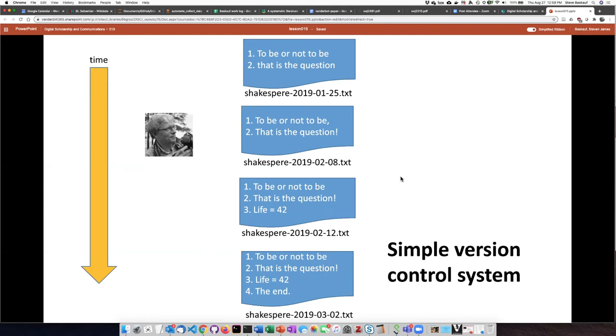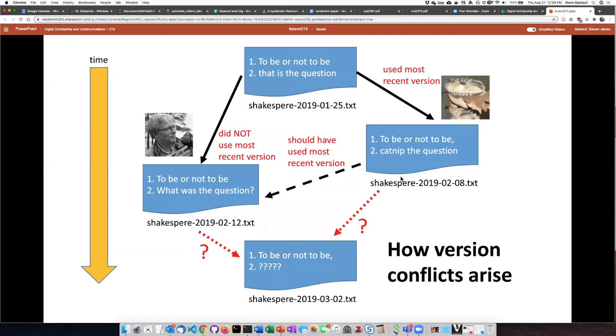However, even the simple version control system is not flawless, and it particularly is a problem if you're working on two different computers or if you're working with another collaborator on different computers.